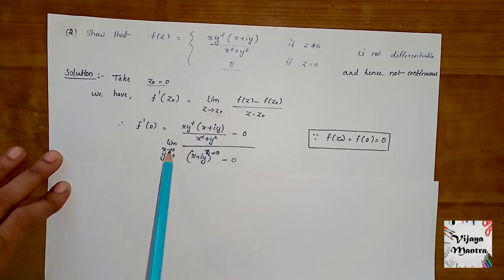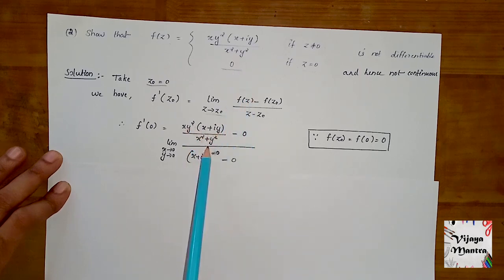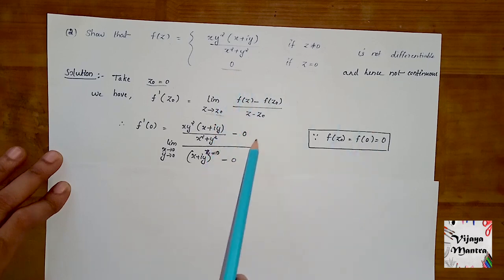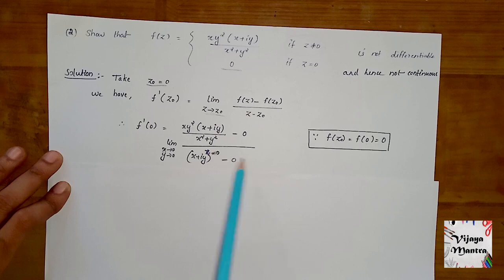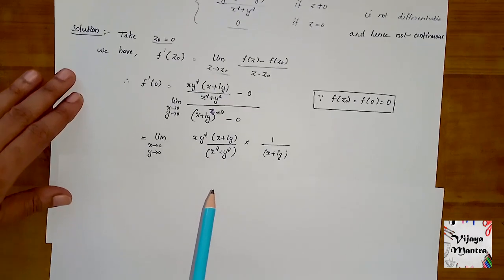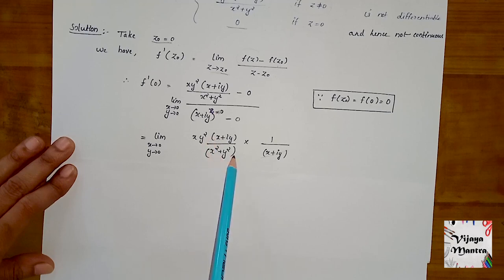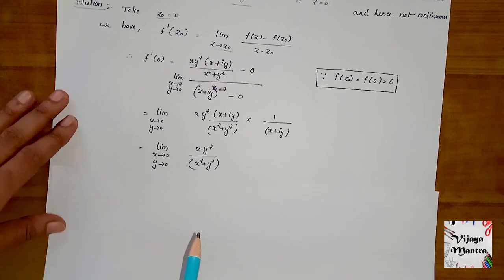So f'(0) = limit as x → 0, y → 0 of [xy²(x + iy) / (x² + y²) - 0] / (x + iy - 0). The denominator is z = x + iy. We can write 1/(x + iy), and then (x + iy) cancels. So we get limit x → 0, y → 0 of xy² / (x² + y²).